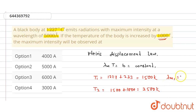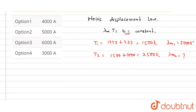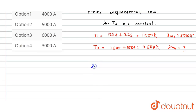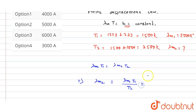We need to find lambda m1. Since lambda m times T equals b is constant, we can write: lambda m1 multiplied by T1 equals lambda m2 multiplied by T2. Therefore, lambda m2 equals lambda m1 into T1 divided by T2.